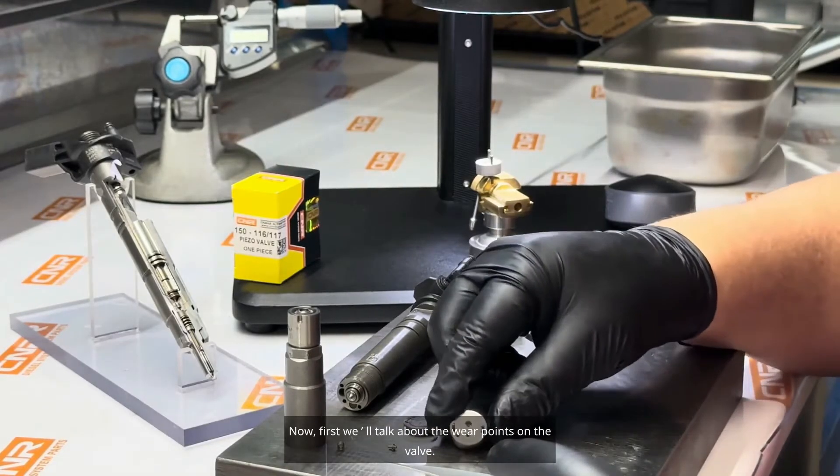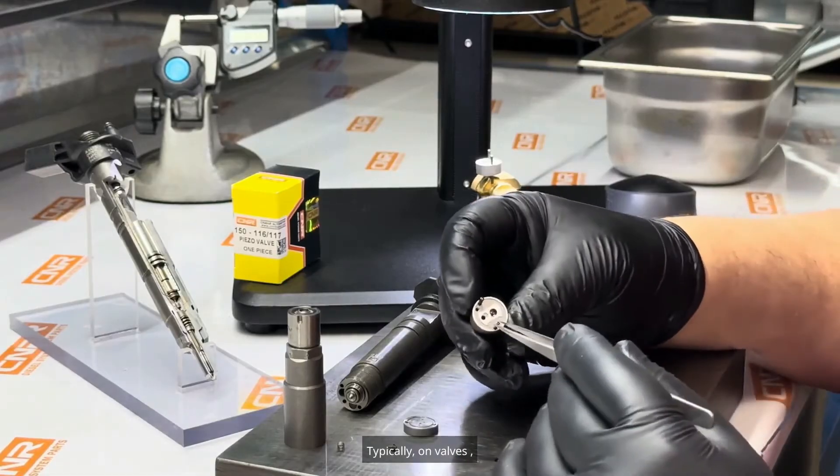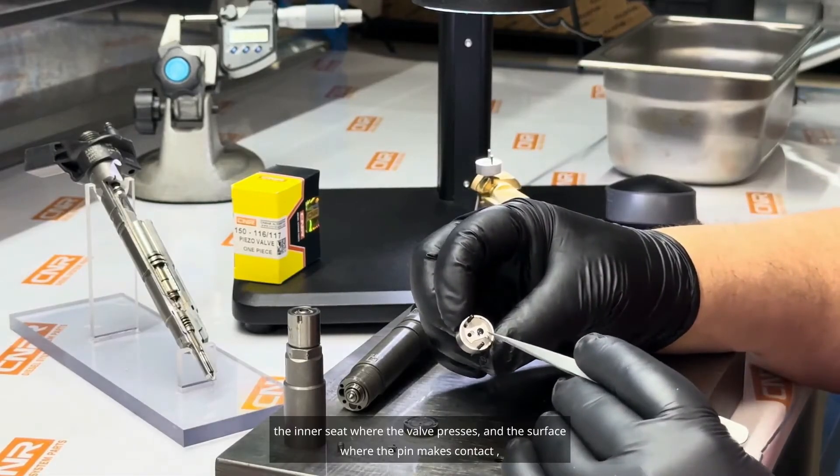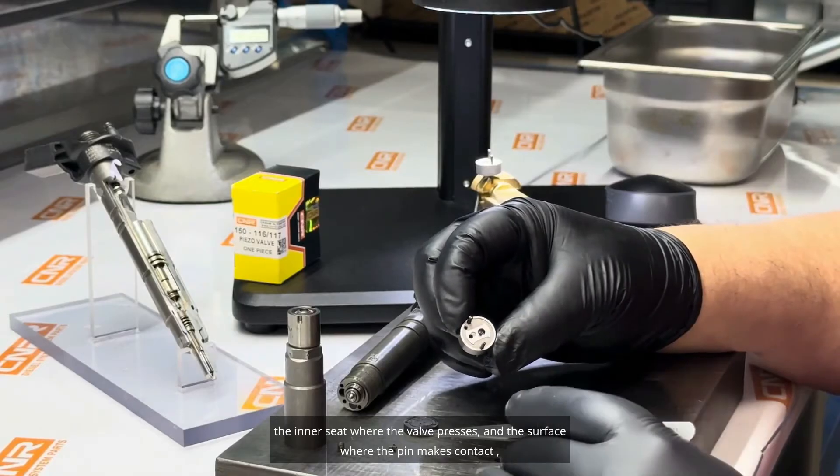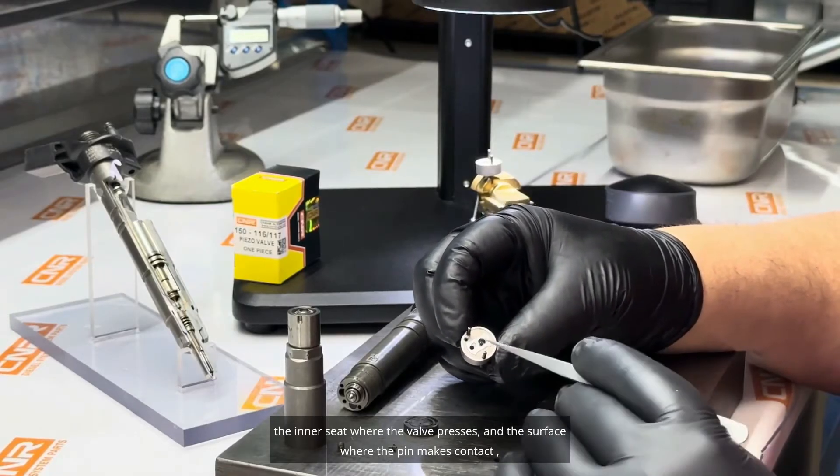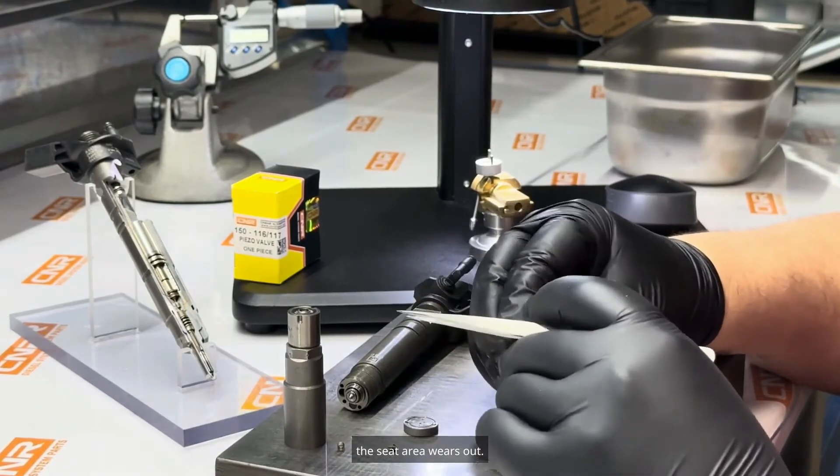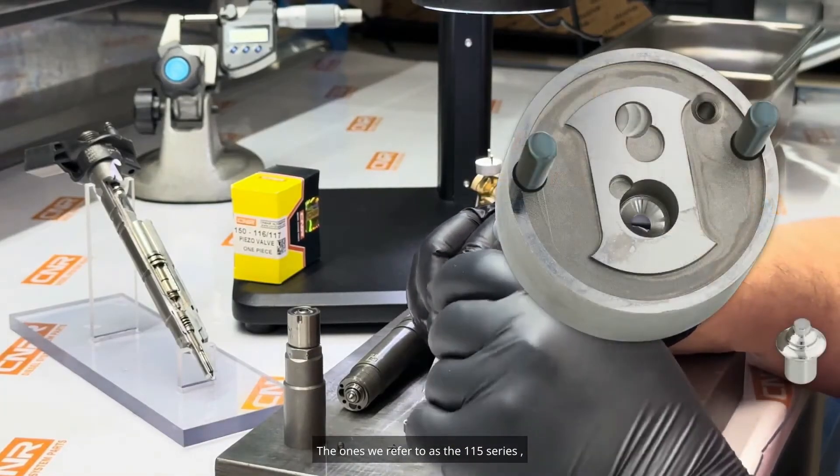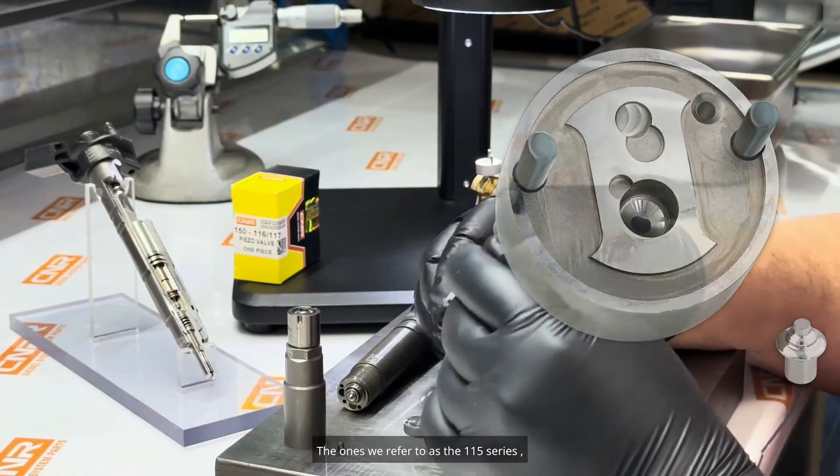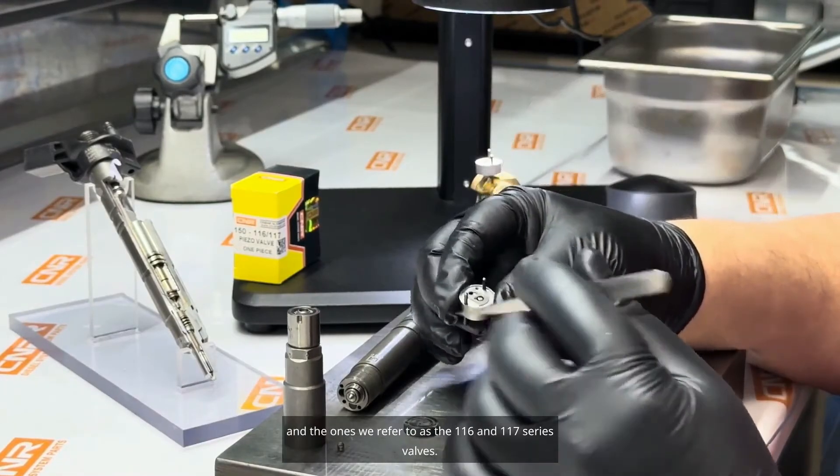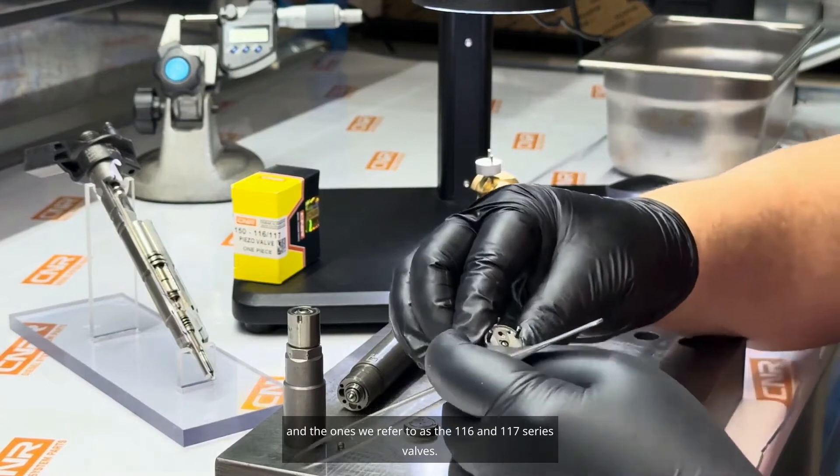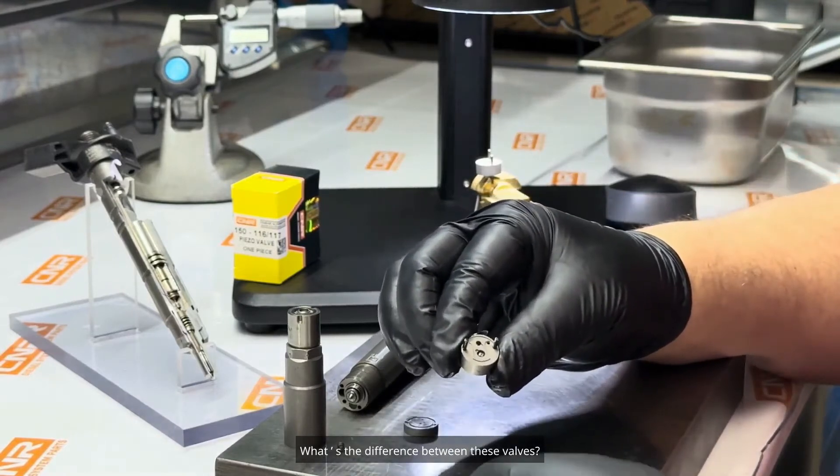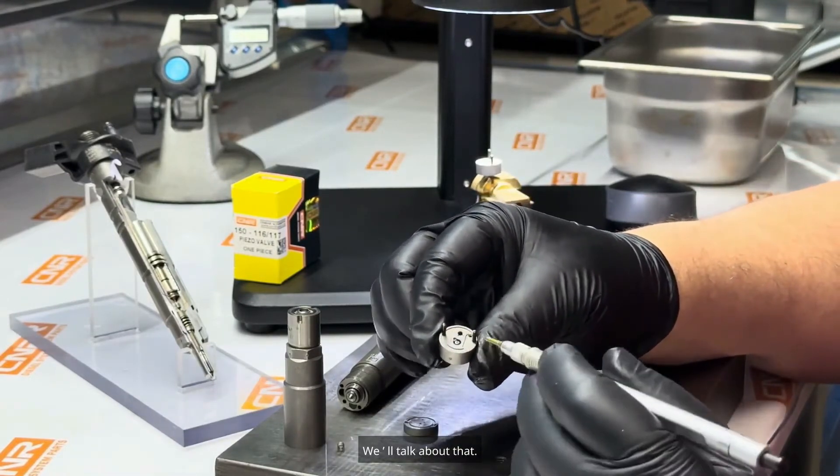Now, first we'll talk about the wear points on the valve, typically on valves. The inner seat where the valve presses, and the surface where the pin makes contact. The seat area wears out. We have two types of valve models. The ones we refer to as the 115 series, and the ones we refer to as the 116 and 117 series valves. What's the difference between these valves?